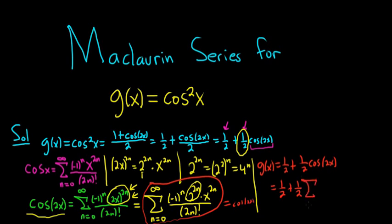So it's the infinite sum as n runs from 0 to infinity of negative 1 to the n. And then we have 2 to the 2n. And then we have x to the 2n. And then over here we have parentheses 2n factorial.